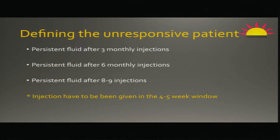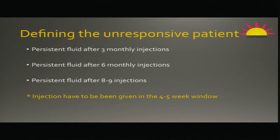The first point is to define what we mean by unresponsive treatment. There are many definitions — some say after three injections you call it unresponsive, others say six injections, and some studies say eight to nine injections. But you cannot define responsiveness unless you have treated the patient properly in the prescribed drug window. If you give the drug after seven months or seven weeks and then say it is not responding after three injections, you have gone against the protocol — so that is not something you can define unresponsiveness with.